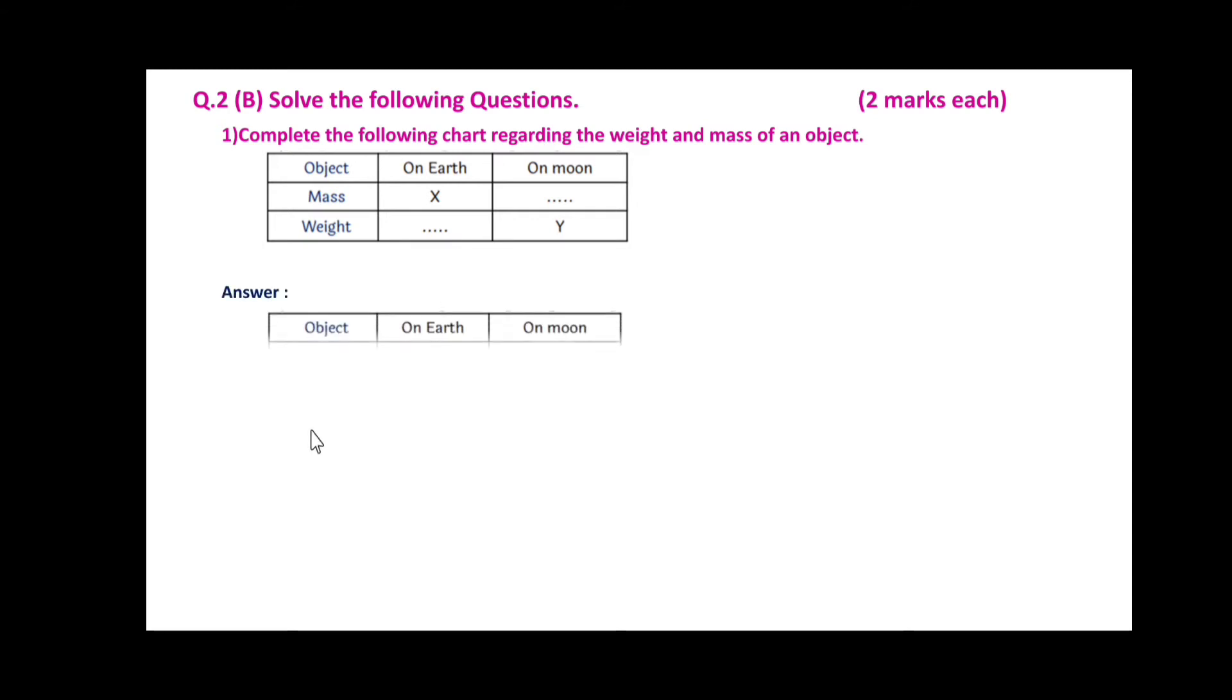The solution for this will be: If mass on the earth is x, then the mass on the moon will be also x. If the weight on the moon is y, then on the earth it is 6y.